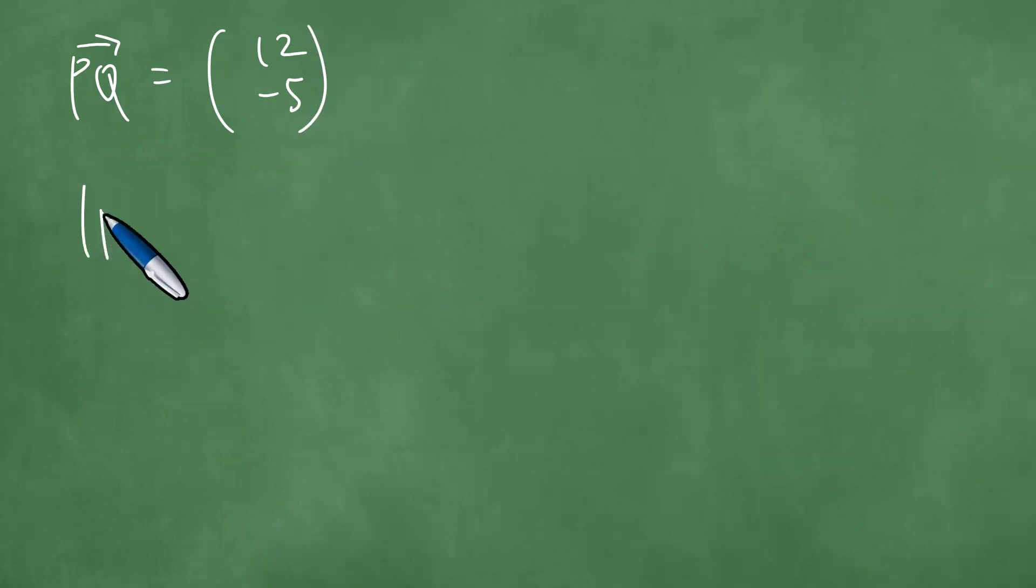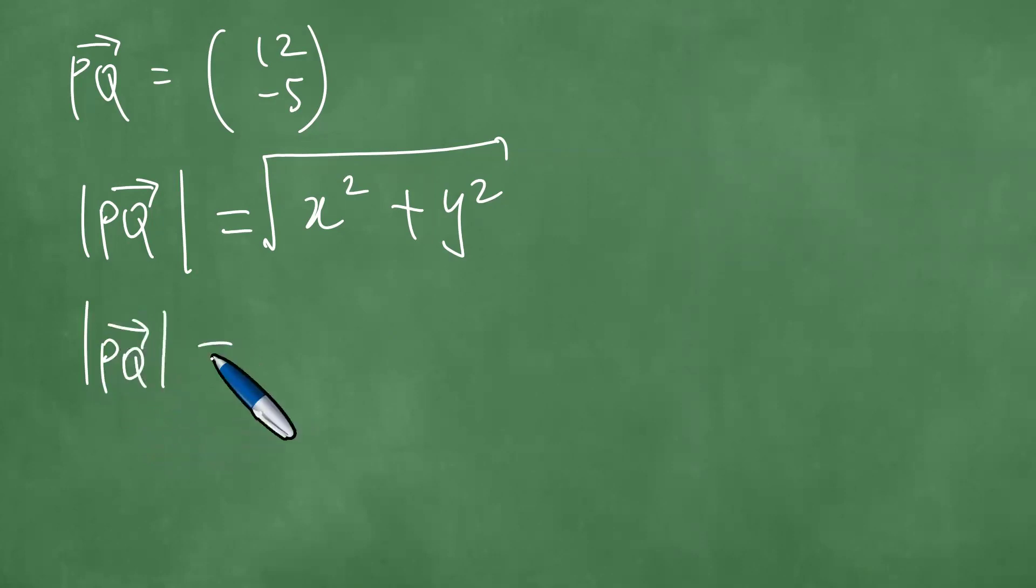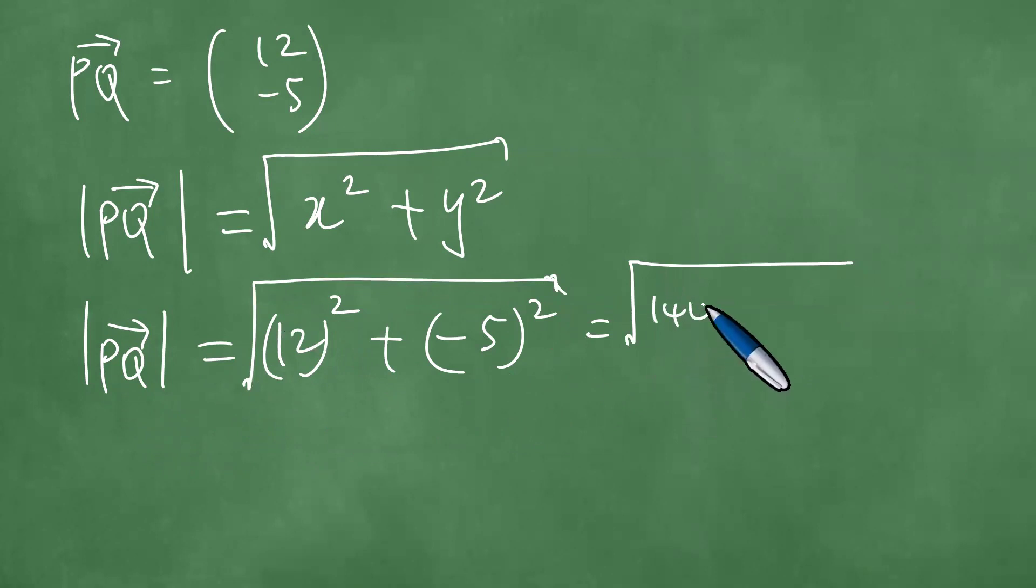The magnitude of the vector PQ is determined by using this particular formula. The magnitude of the vector PQ is the square root of x squared plus y squared. These squares yield 144 plus 25, giving us the square root of 169, which is exactly 13 units.